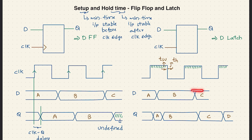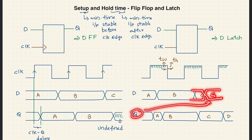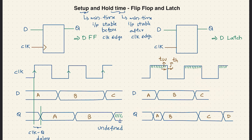What if the input is changing near the transition? If C is not stable before the falling transition, Q wants to remember C but the setup time is violated — so the output will be undefined in that case. Where there is no violation, we get the correct output. This is how we define setup time and hold time for a latch.